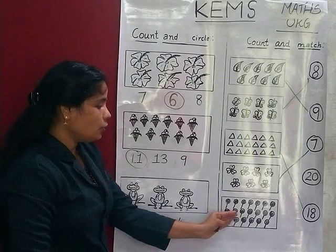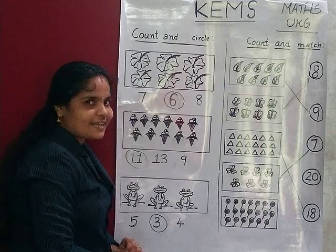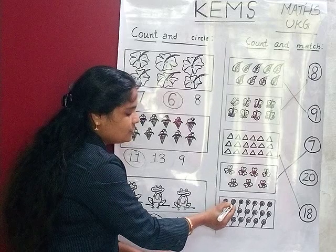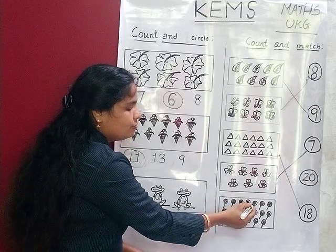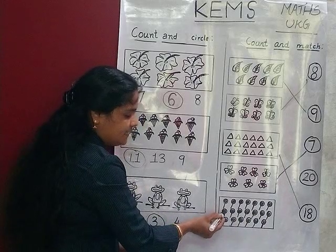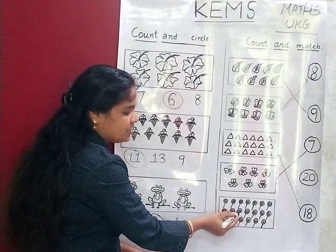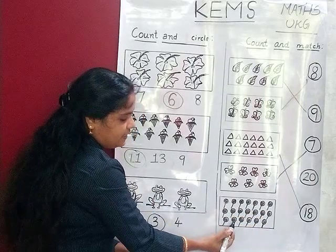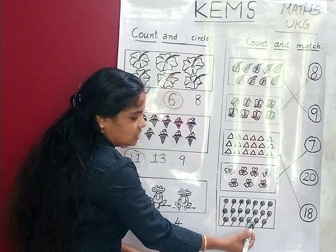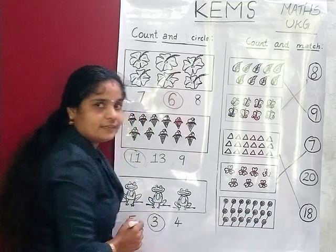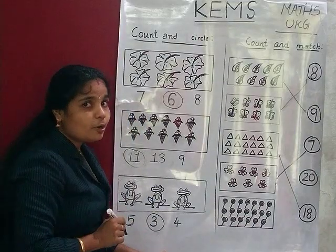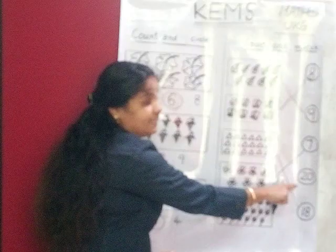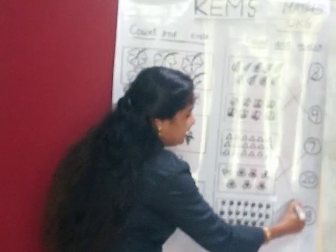Then how many lollipops are there? Let's count them, so listen carefully: 1, 2, 3, 4, 5, 6, 7, 8, 9, 10, 11, 12, 13, 14, 15, 16, 17, 18, 19 and 20. How many lollipops are there? 20 lollipops. Then who is number 20? Yes, here is 20. So let's match.